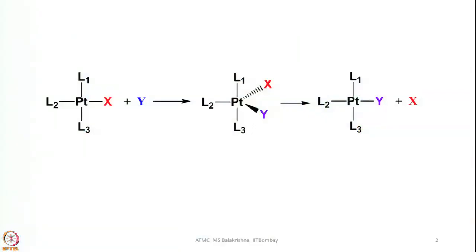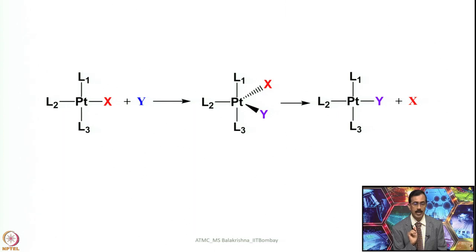We all know that in case of square planar complexes, if you want to do a substitution reaction, the preferred intermediate would be having a coordination number of 5, preferably having trigonal bipyramidal geometry. Now let us see how this trans effect influences the entering ligand as well as leaving ligands while we perform substitution reaction. When we perform substitution reaction on a square planar complex, the preferred intermediate has coordination number 5, and the preferred geometry is trigonal bipyramidal.